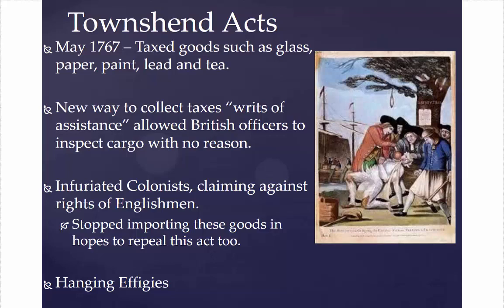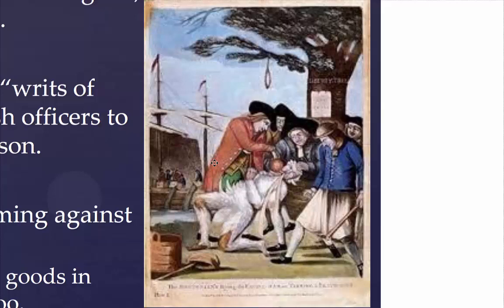As more and more acts came down, protests grew increasingly angry. Colonists began hanging and burning effigies — dolls or straw figures representing tax collectors and British officials in the colonies. This was basically a statement to those officials: don't mess with us, we're not happy, don't tax us anymore. This is getting to the point where colonists are genuinely frustrated and feel things have gone too far.